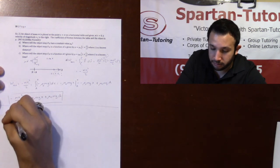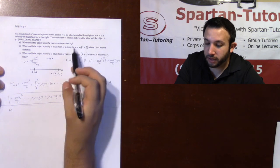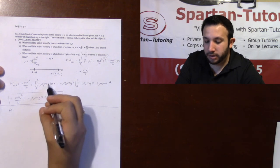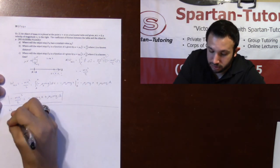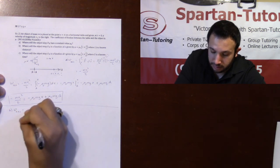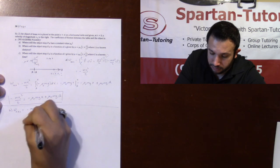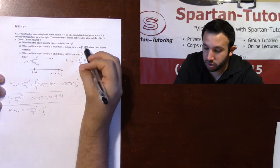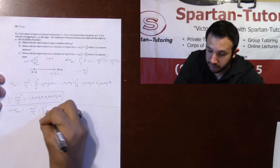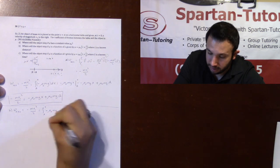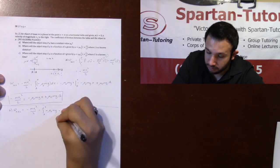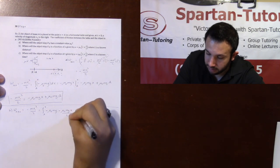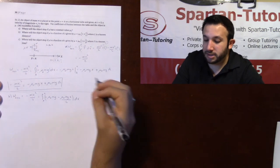Now let's take a look at part b: where is it going to stop if mu is a function of x given by the following? You do the exact same thing — nothing is different. The only difference is your force, because your mu is a little different. We still say our net work equals negative mv1² over 2, and this will be the integral from a to x. Distributing the mg in, this becomes negative mu naught·mg minus mu naught·mg·x over L, integrated with respect to x.